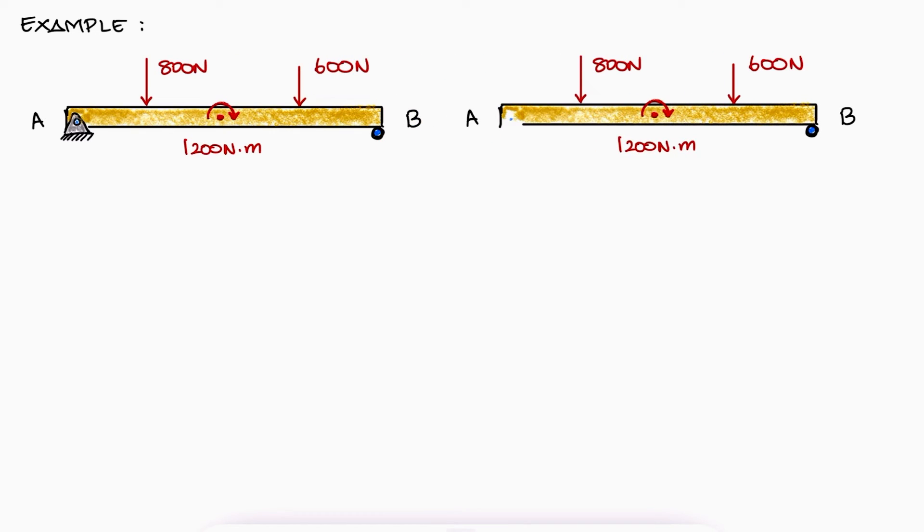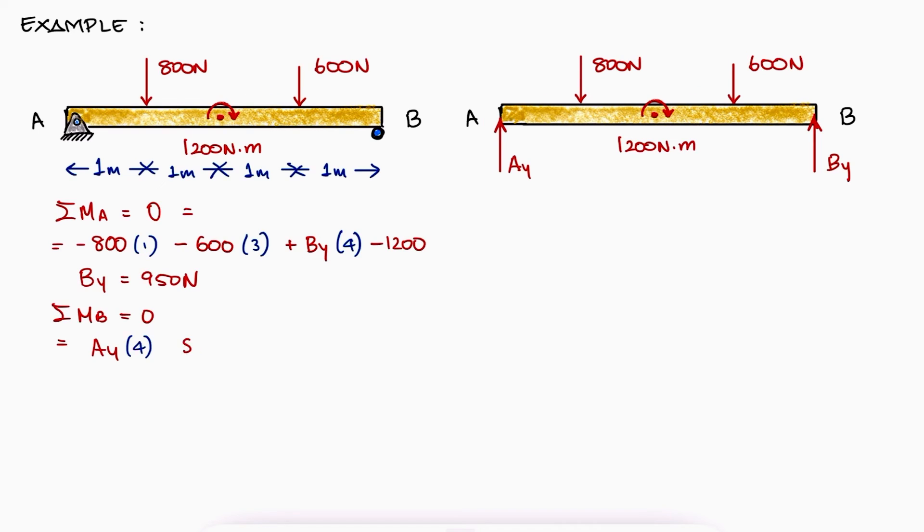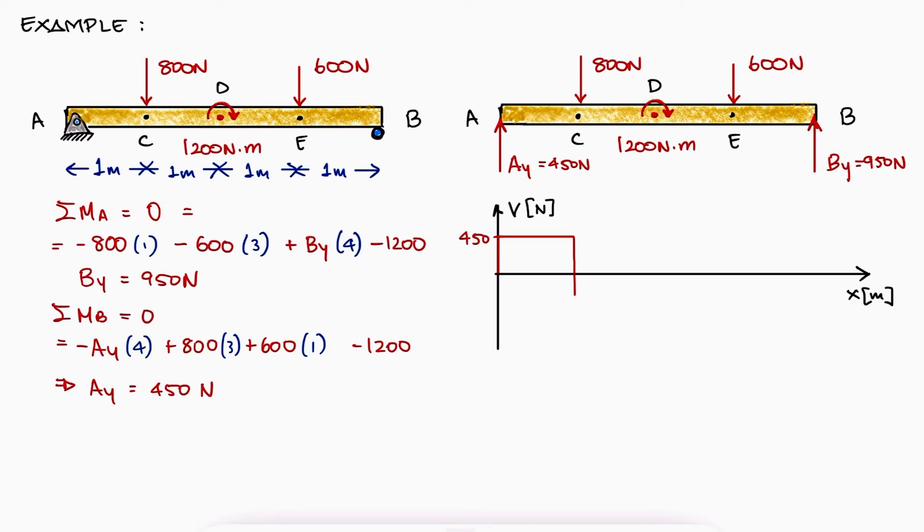Let's look at a quick and simple example where we make use of what we've learned today, and if you want to check out more complex examples, make sure to check out the example links in the description below. If we want to find the shear and moment diagrams, we would begin with a free body diagram to find the reactions at A and B. A sum of moments about A allows us to find BY and the sum of moments about B, AY. The shear diagram, with the x-axis in meters and the y-axis in newtons, would go up at A, down at C and E, and up at B.